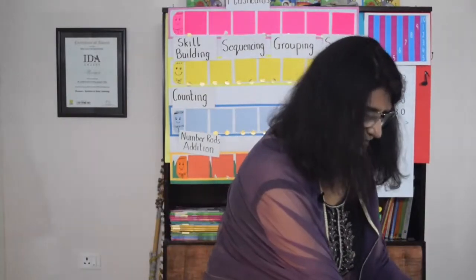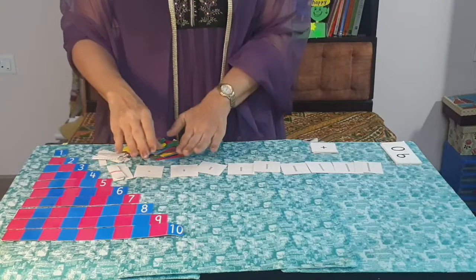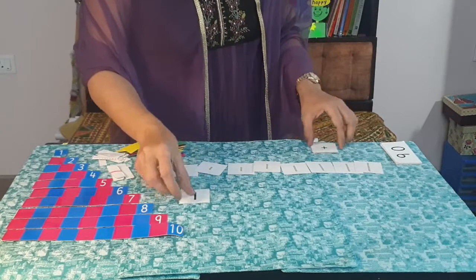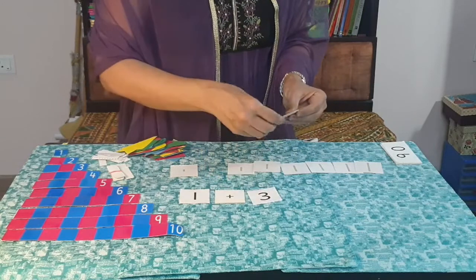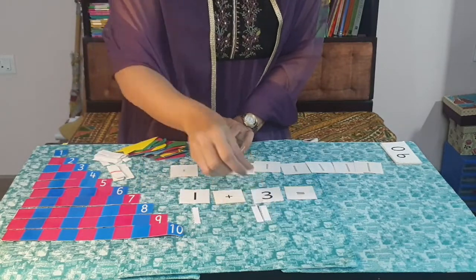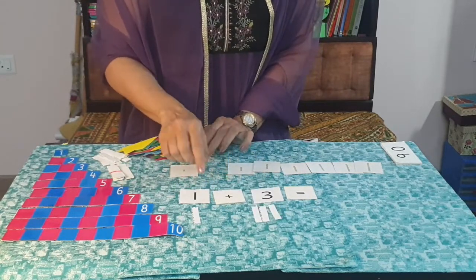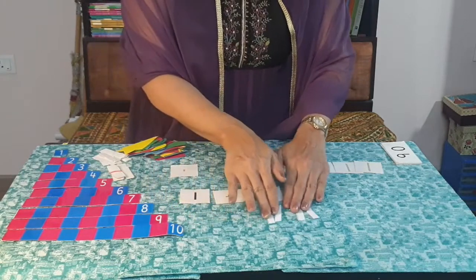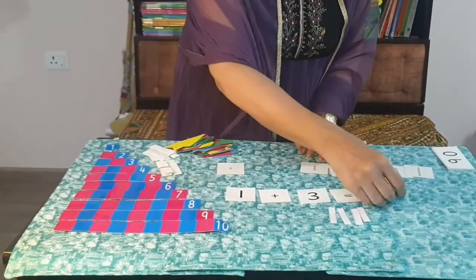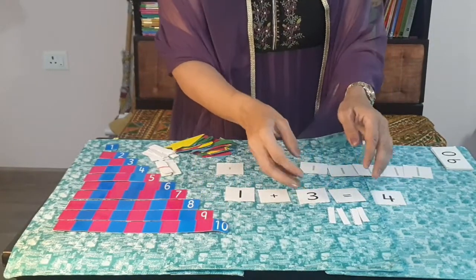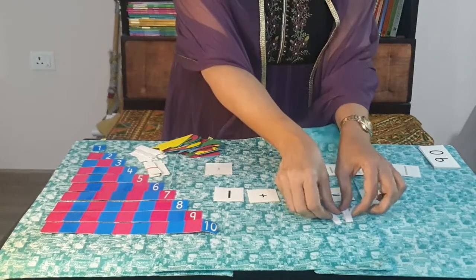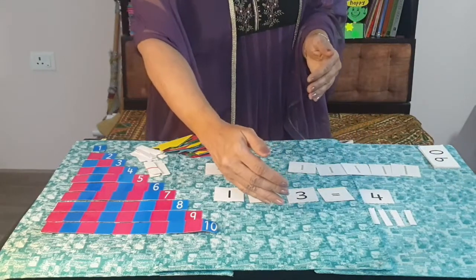For addition using these number cards, you can use the number rods and cards from 1 to 9. For example, for one plus three equals — put a one here, then one, two, three here. Because they have to add, they put all the pieces together and count: one, two, three, four, then take the card of four and place it as the answer. Rather than placing them separately, it's better to pick up the one and three, combine them, and place it here as the answer.